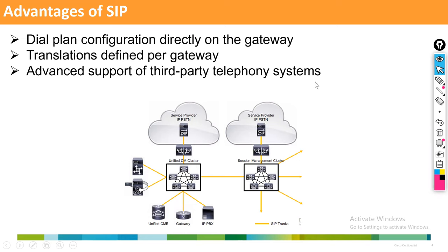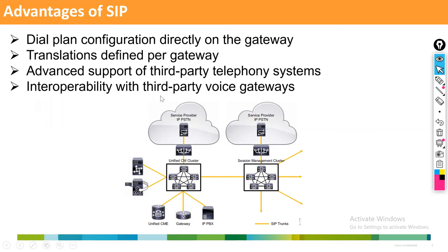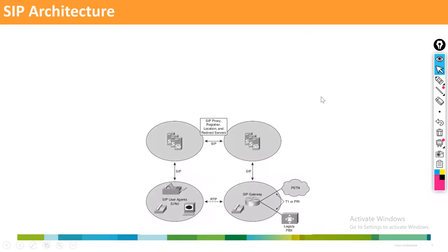Another advantage is advanced support for third-party telephony systems — any third-party application, server, or infrastructure can be integrated. Interoperability with third-party voice gateways is also supported. For example, CUCM is a Cisco product, but instead of a Cisco gateway you can use an HP gateway — SIP allows CUCM and the HP gateway to communicate. These are the main advantages of SIP.